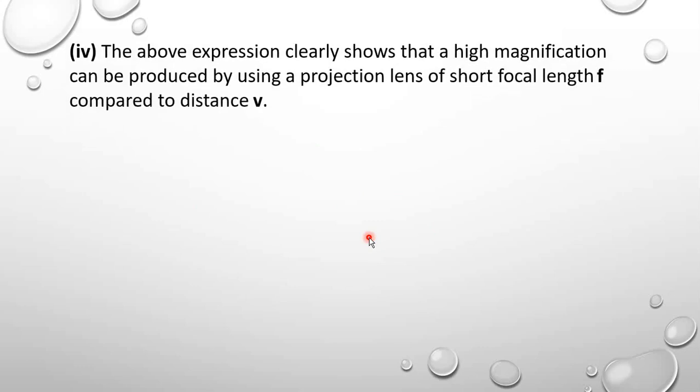Let's also note that the expression M = V/F − 1 clearly shows that when F is small, we shall have a bigger or higher magnification, since we have V/F. So it implies that for us to get a larger magnification, F must be smaller than V, because M = V/F − 1.